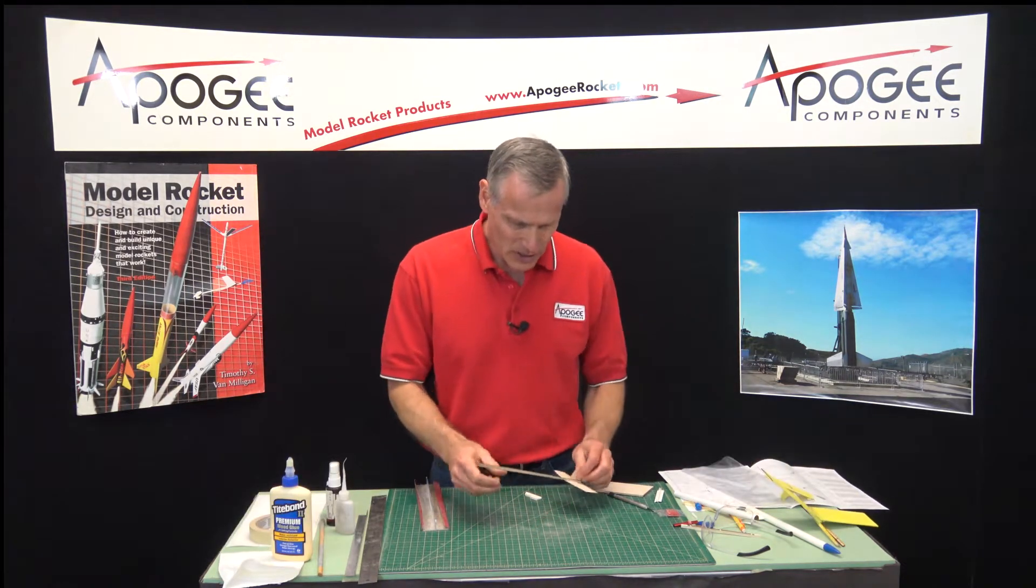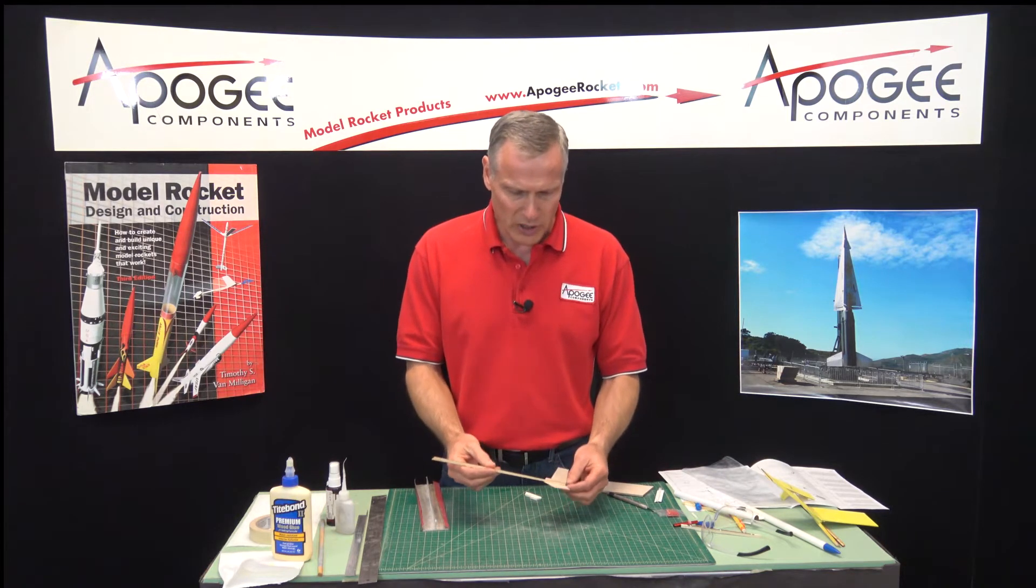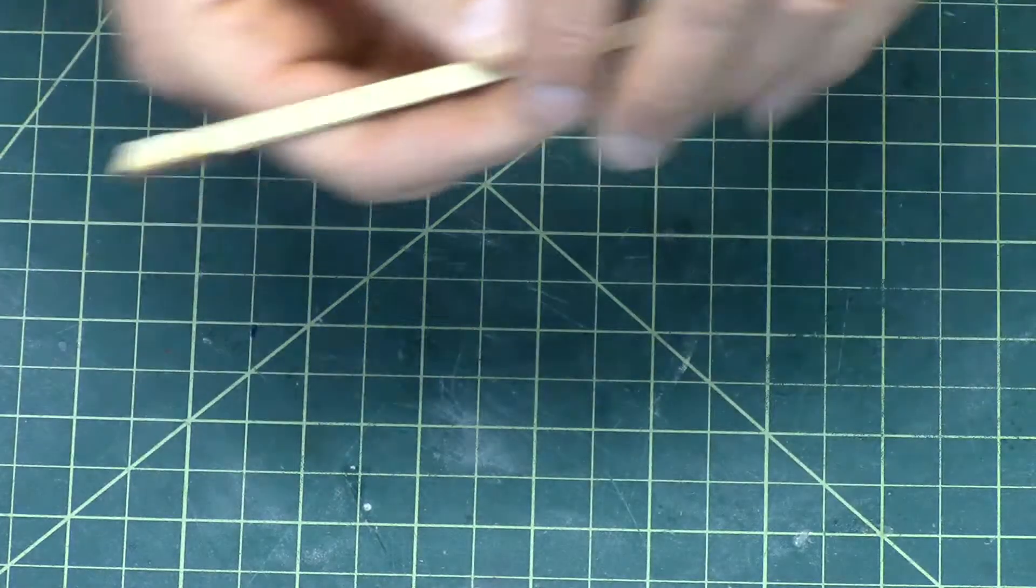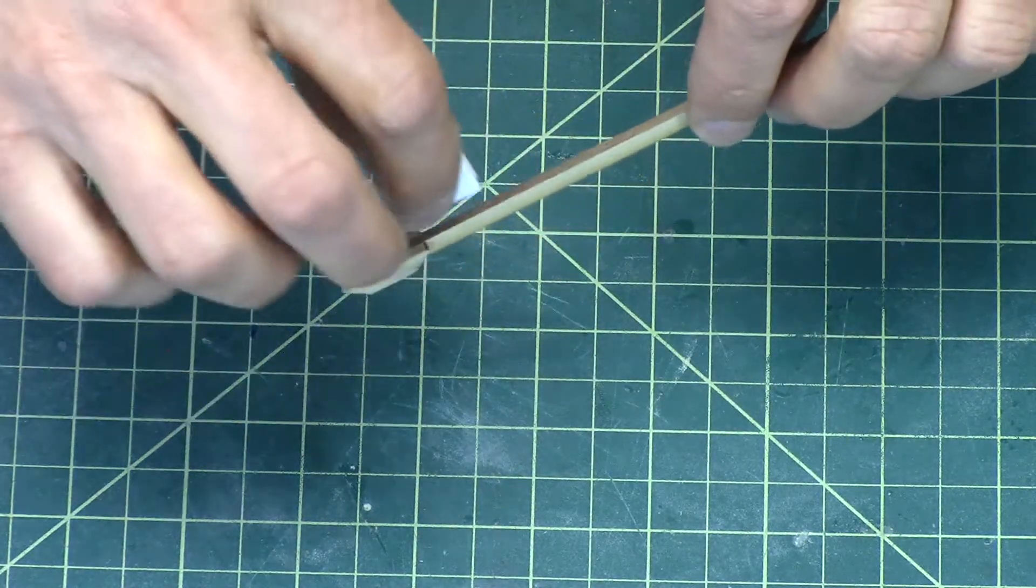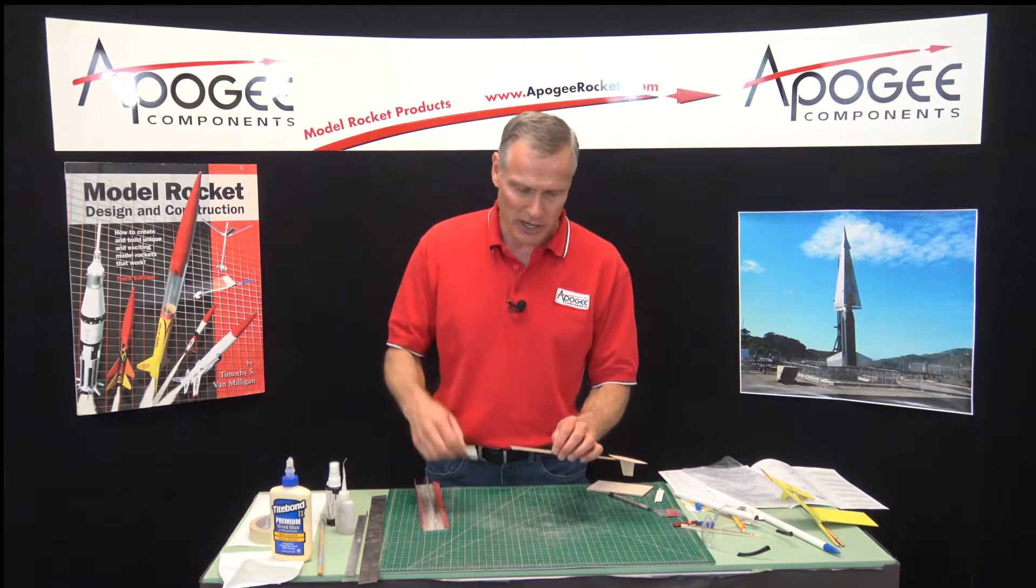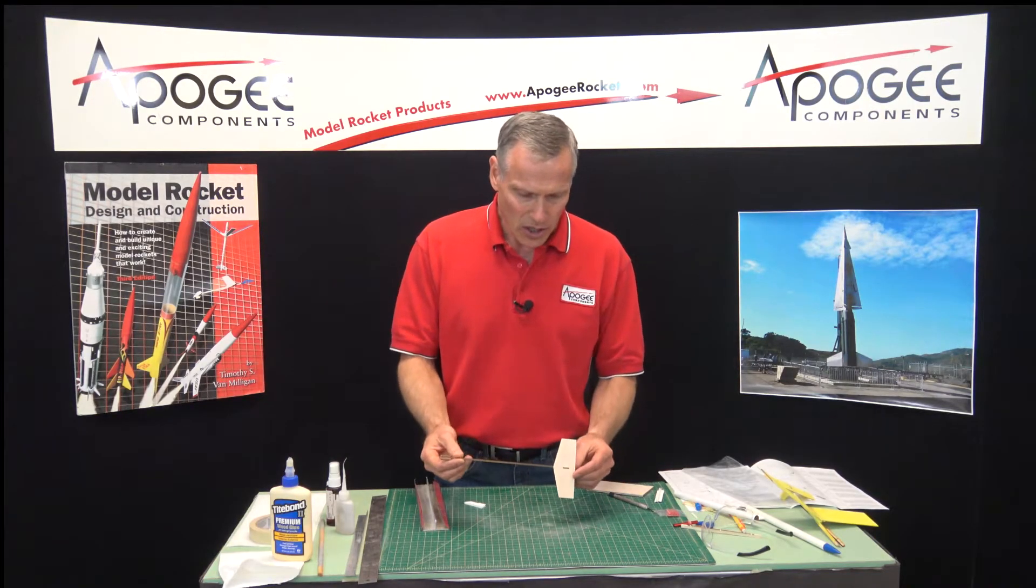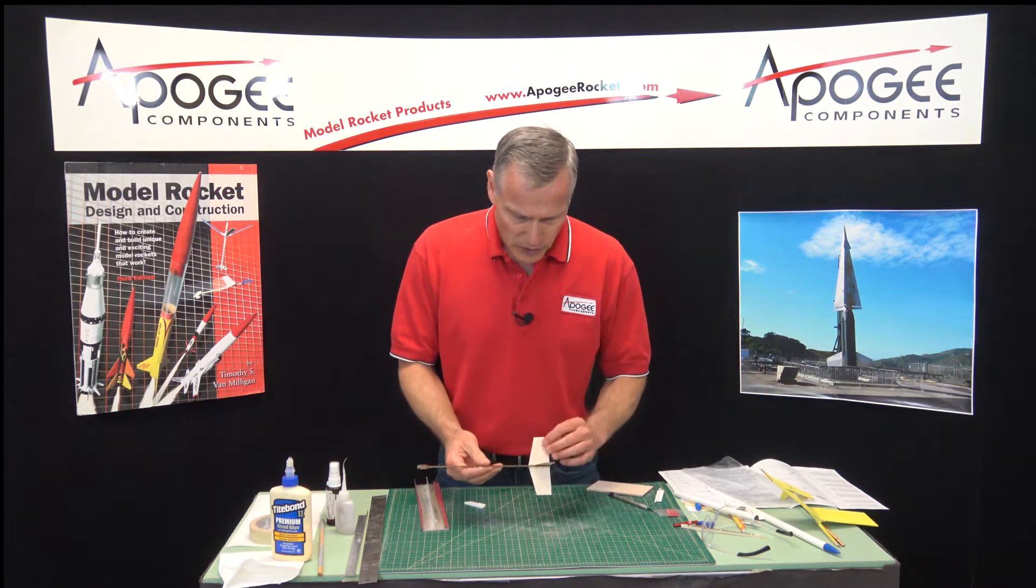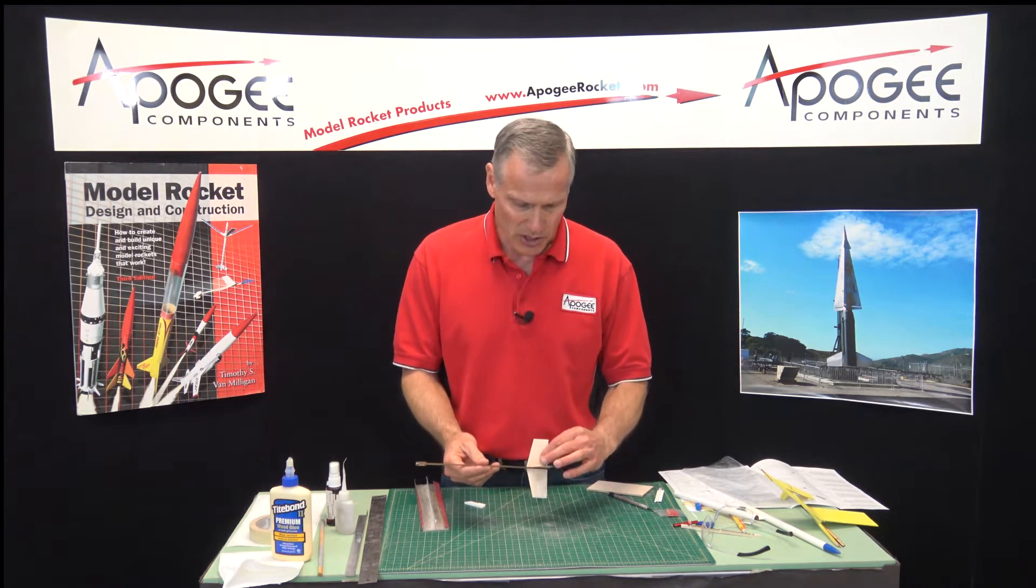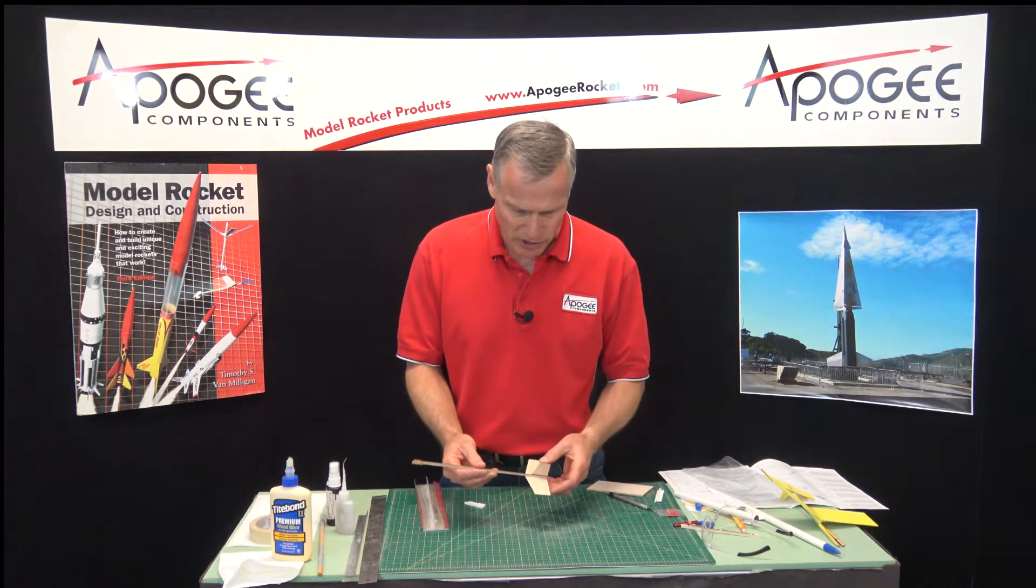In our last episode, we installed the horizontal and vertical tail, plus we put on the hooks that are used to engage the pop pod that will carry the rocket into the sky. Now everything is dry, because in the last episode I wanted to make sure that everything was dry.